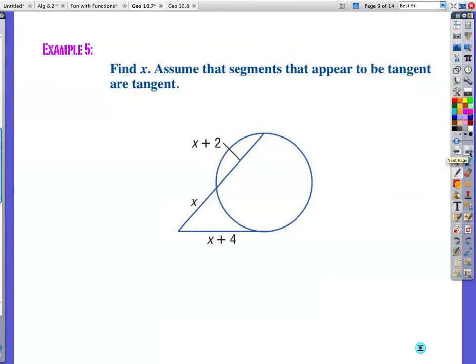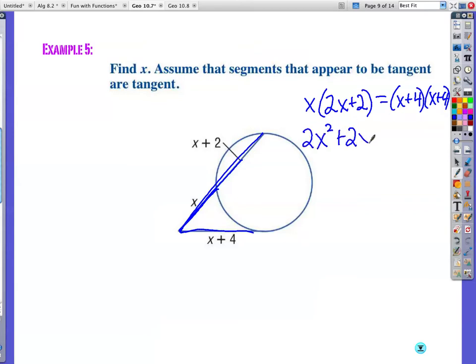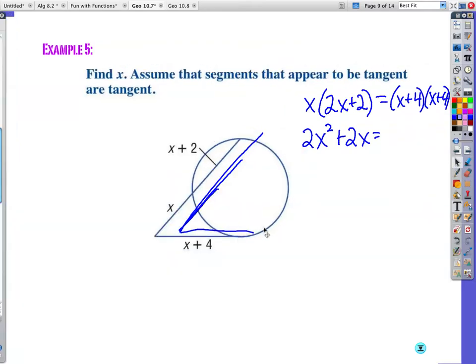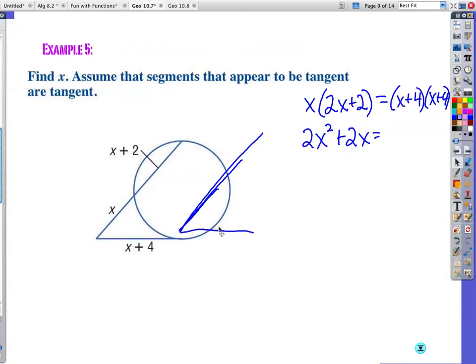Here we go. Now, outside times the full length, x times x plus 2, isn't that 2x plus 2, is equal to the outside times the full length, which is x plus 4 again. So this is going to be a dandy. I'm going to take everything times x, so I get 2x squared plus 2x. What do I do with the math on that? I got to foil. So remember, foil, first, outer, inner, last.